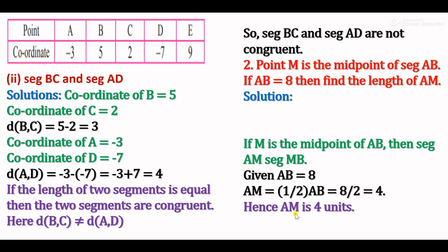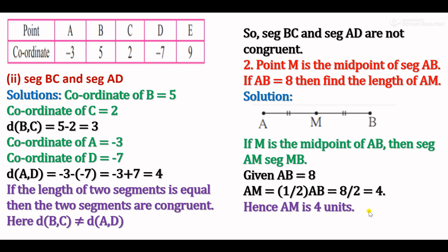Since M is the midpoint of AB, AM equals MB. Given AB equals 8, the length of AM is half of AB, that is half of 8, which equals 4. Therefore, AM equals 4 units.